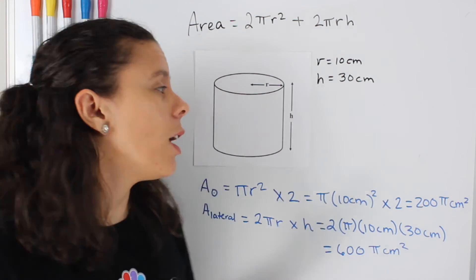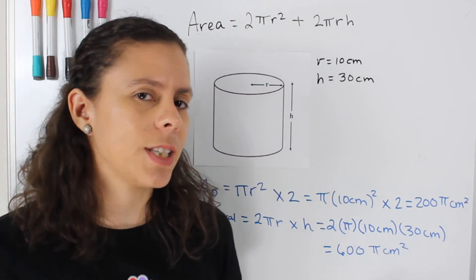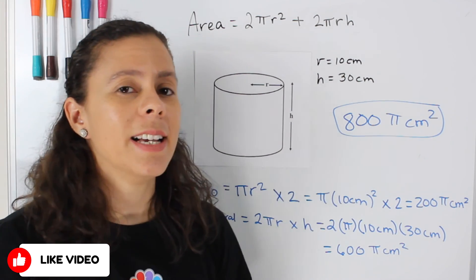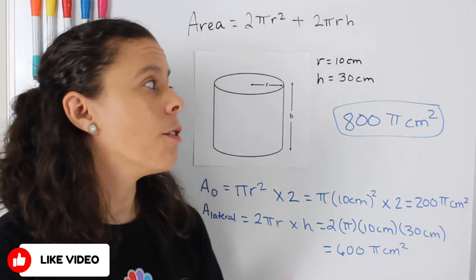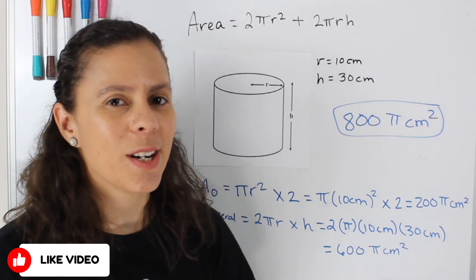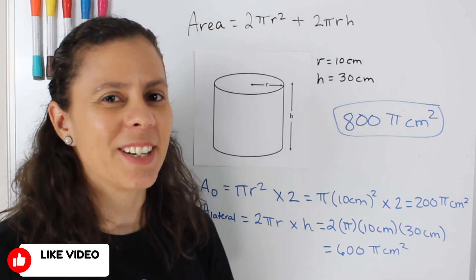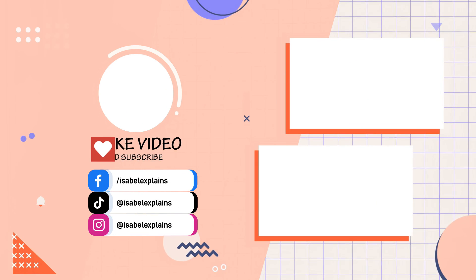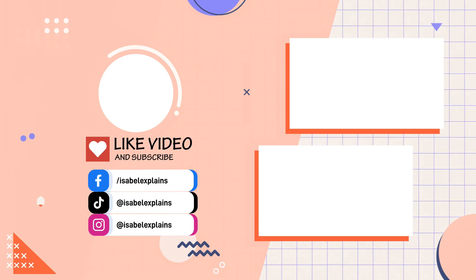Now, what is the total area of the entire cylinder? Just add them up. And that is 800 pi centimeters squared. Now, if you want to find out what is the volume of that cylinder, make sure to watch the next video. See you there. Bye.